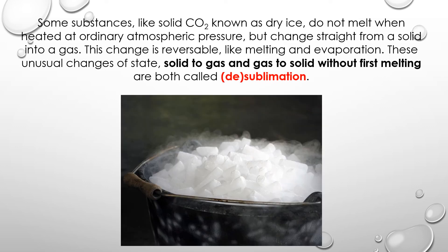Some substances, like solid carbon dioxide known as dry ice, do not melt when heated at ordinary atmospheric pressure, but change straight from a solid into a gas. This change is reversible, like melting and evaporation. These unusual changes of state — solid to gas and gas to solid — without first melting are both called sublimation. Sublimation refers to solid going to gas, and the reverse process is gas going to solid.